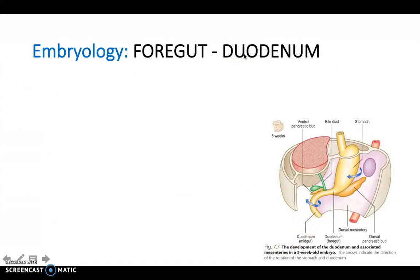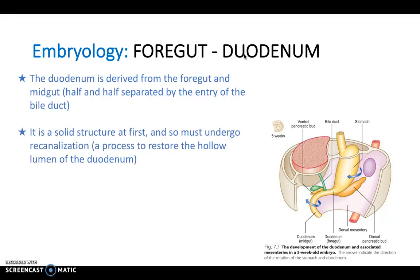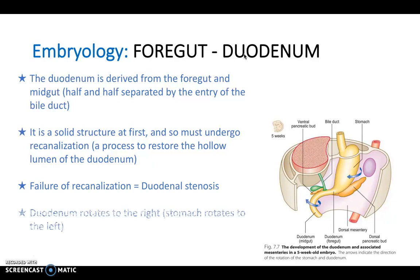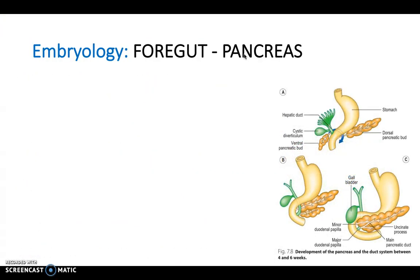The duodenum is derived partly from the foregut and partly from the midgut, separated by the entry of the bile duct. It's solid at first and must undergo recanalization to restore its hollow lumen — failure causes duodenal stenosis. The duodenum rotates to the right, whereas the stomach rotates to the left, and it has a dual blood supply due to its dual derivation. The duodenum is retroperitoneal, covered in peritoneum only on the anterior surface.